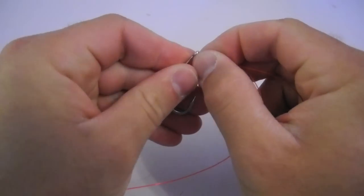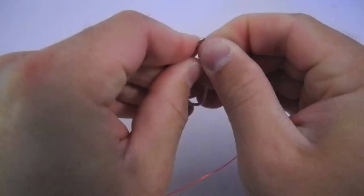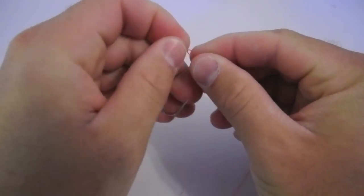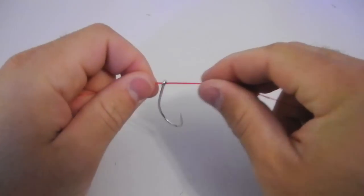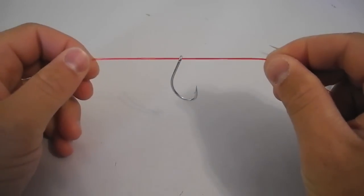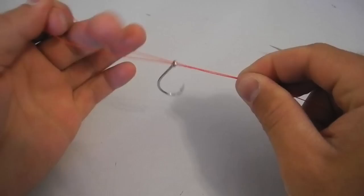Then all I'm going to do is just stick it through the eye of the hook, just like so. And I want to leave a generous piece hanging off.